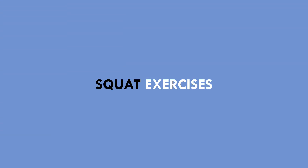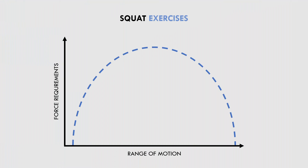Squat and leg press variations generally have a bell-shaped tension curve. This means that the movement is easier at the bottom and top range of the lift, but more difficult midway through. For example, a deep high bar squat is easy at the top and very bottom, but hardest at the sticking point usually just above parallel. Most standard squat and leg press variations have this same tension curve.